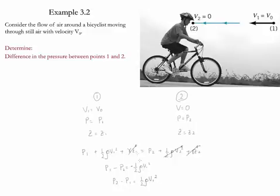Since the value of v1 is equal to the air velocity, we could write this as one half rho v0 squared. That is the difference between the pressures using the two points given by the problem.